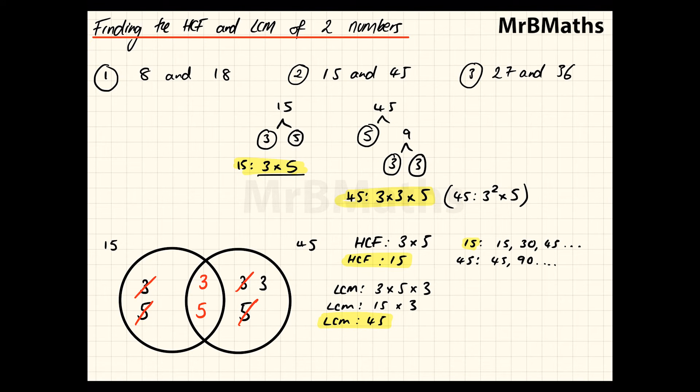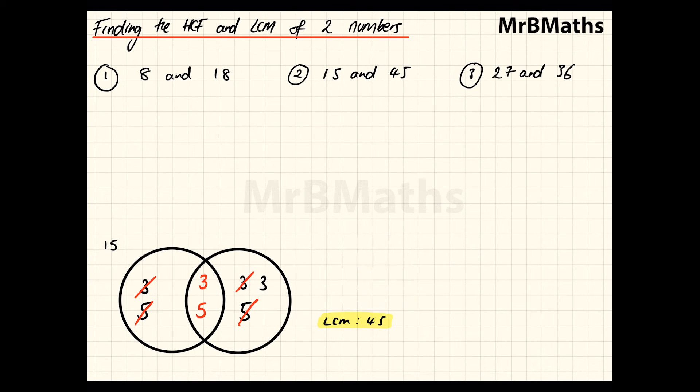Right. And let's go on to the third question. I'll rub this out here. 27 and 36. So, I'm going to go with 3 and 9. 3 is prime. 9 is not. 3 times 3 to give us 9. So, 27, 3 times 3 times 3. And again, you can write 3 cubed. So, that's your answer here.